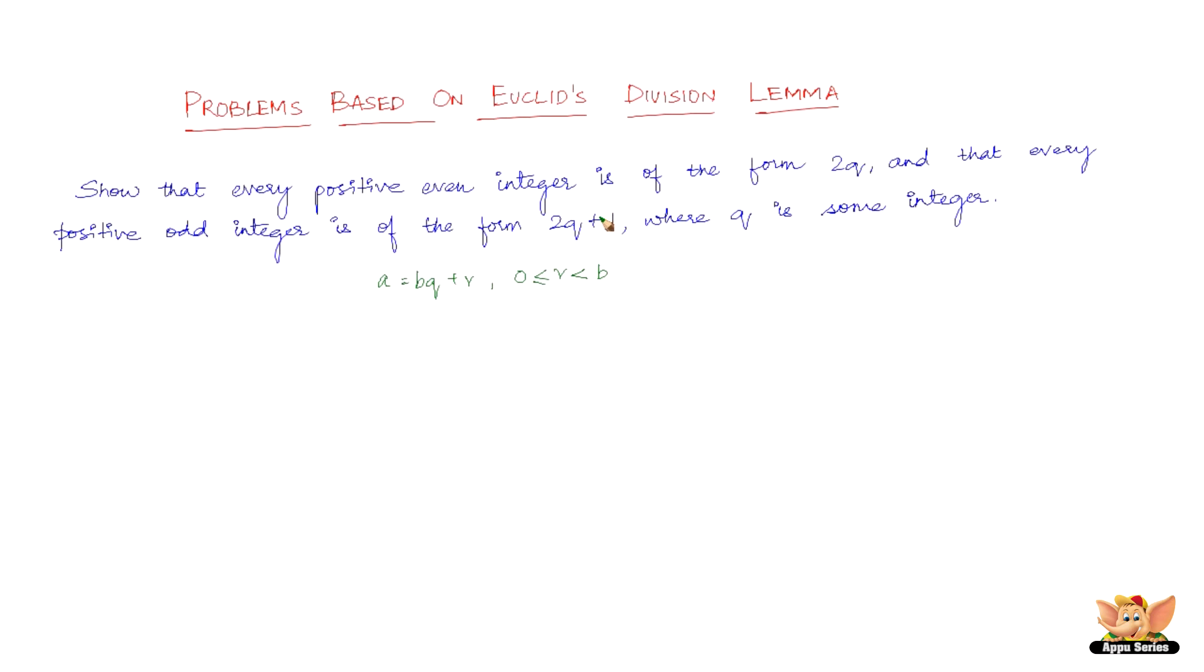Now going back to this problem, before we solve it, let's analyze this problem in a very simple way. They say show that every positive even integer—even is the word we have to take into consideration here. The even numbers are 2, 4, 6,